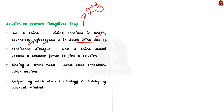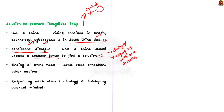The first and foremost solution is consistent dialogue. The USA and China should strive to create a common forum for continuous dialogue, which will engage both countries in finding solutions to existing conflicts rather than escalating them. Both China and the USA also need to end their arms race. Due to the power struggle, both countries are involved in mass arms production, which poses a threat to other nations as well, just like the impact we are facing because of the Russia-Ukraine war.